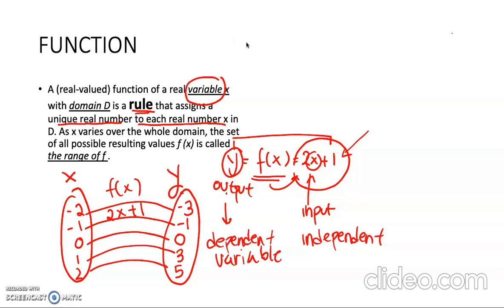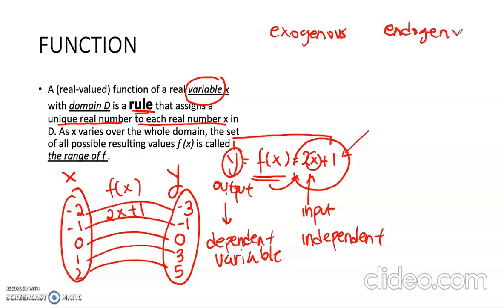Besides independent and dependent variable, there is another term for a variable that is known as exogenous and endogenous. To understand more about exogenous and endogenous, it would be easier if we see it in a system of equations.